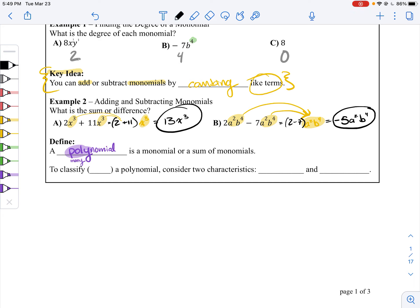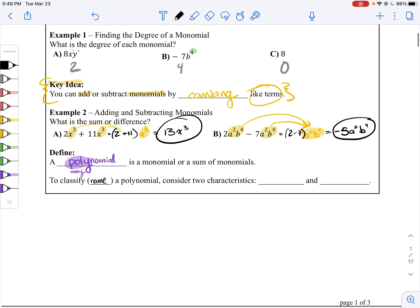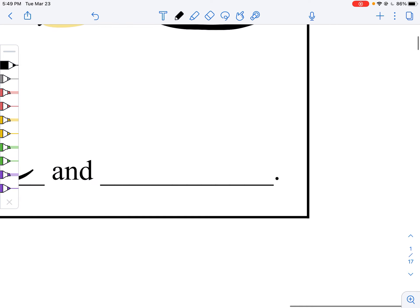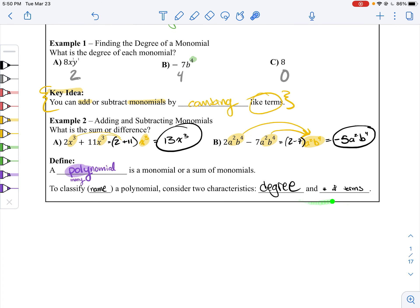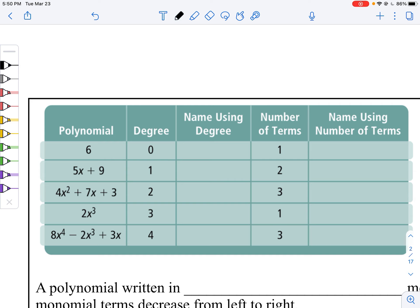To classify, which means to put a name on it to say what kind of polynomial it is, we need to consider both its degree and number of terms. The number of terms is going to be how many monomials does it have inside of it. Here's a whole chart with all of them.